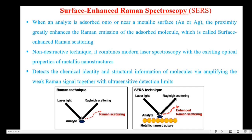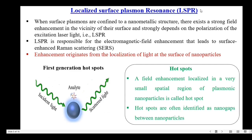Let's move on to localized surface plasmon resonance, that is LSPR. When surface plasmons are confined to a nanometallic surface, there exists a strong field enhancement in the vicinity of the surface, which strongly depends on the polarization of the excitation laser light — that is called LSPR. This LSPR is responsible for the electromagnetic field enhancement that leads to surface enhanced Raman scattering. The field enhancement originates from the localization of light at the surface of the nanoparticles. This localized field enhancement in a very small spatial region of a plasmonic nanoparticle is called the hotspot — this is called first generation hotspots.